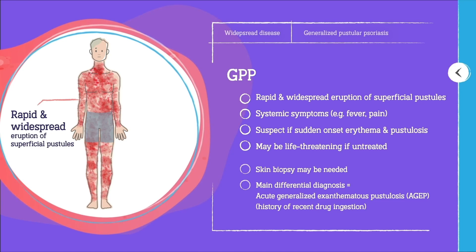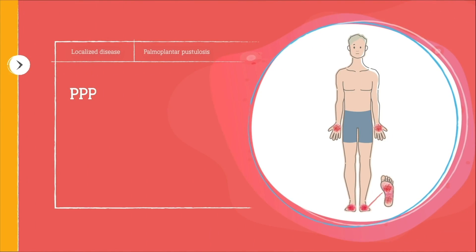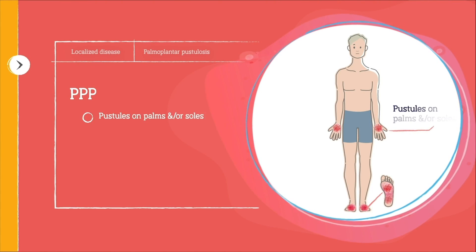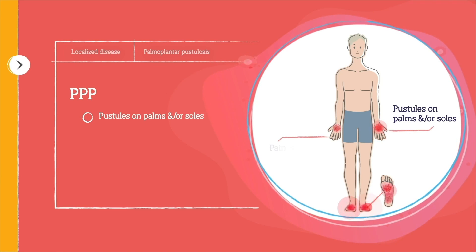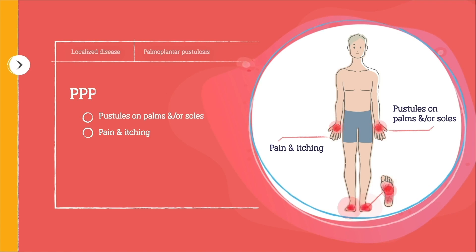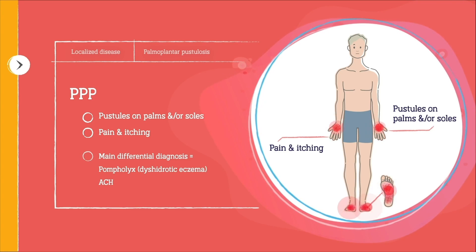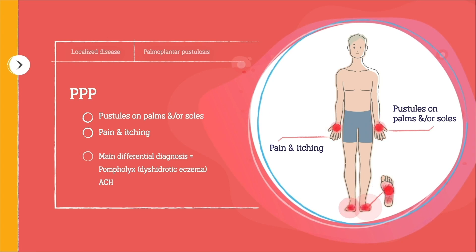Although in practice it may be very difficult to distinguish AGEP from GPP, the vast majority of AGEP cases are associated with recent drug ingestion. PPP is the most common subtype of pustular psoriasis. It presents as a sudden eruption of pustules on the palms and/or the soles of the feet, often accompanied by pain and itching.